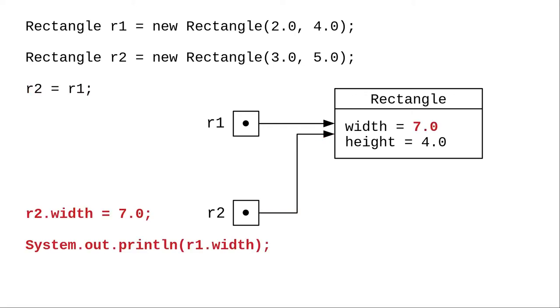Because r1 and r2 now reference the same memory area, this code, setting r2.width to 7, and then printing r1.width, will produce an output of 7.0.